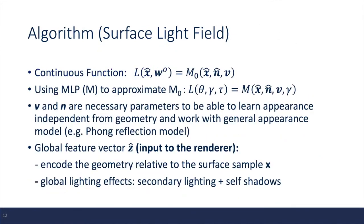So in this case, we try to approximate the surface light field with the continuous function M₀. We can use the multilayer perceptron to approximate this continuous function. Note that the viewing direction and the surface normal are necessary in this case for us to learn appearance and geometry independently. And also, it allows us to work with the general appearance model.